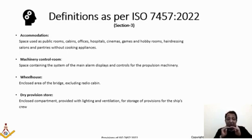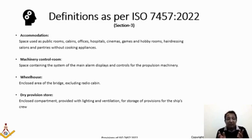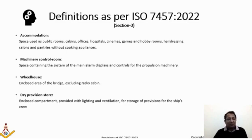The wheelhouse is an enclosed area of the bridge, excluding the radio cabin. The bridge is the topmost level of the marine structure — don't confuse it with a normal bridge. The dry provision store is an enclosed compartment with lighting and ventilation for storage of dry provisions for the ship's crew — not refrigerated provisions. Items like pickles, rice, and wheat are kept in this room.